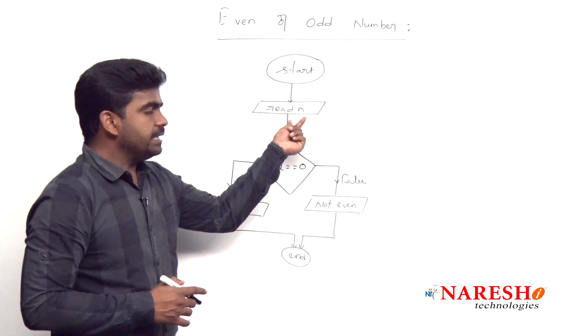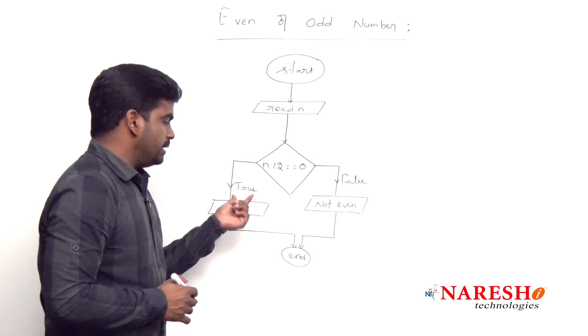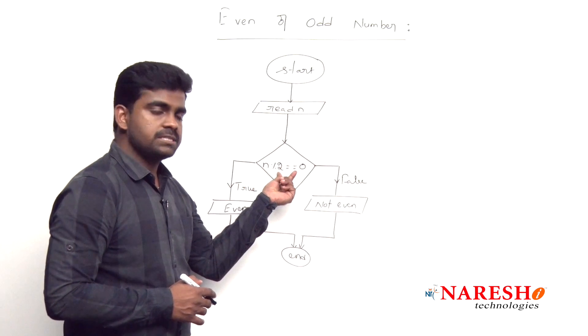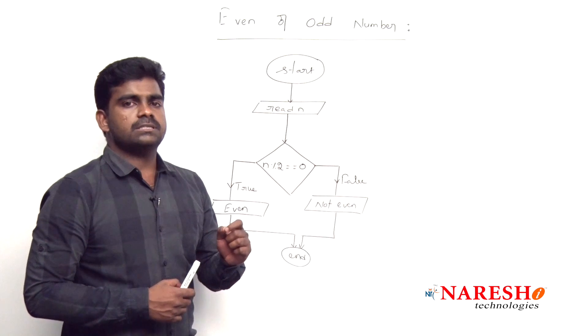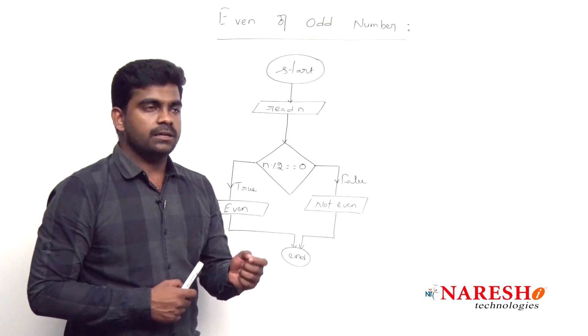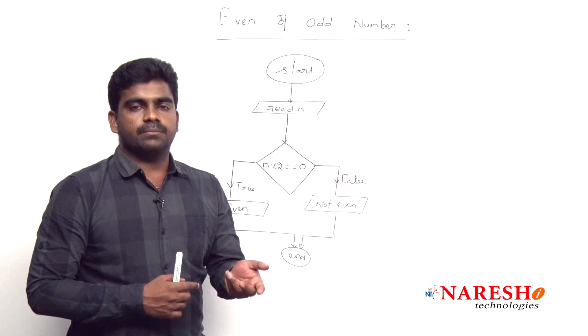Here after reading, we are checking that condition. The condition is true, then it will display that even. If the condition is false, it will display that message is not even. This is just how to write the flowchart to understand that the given number is even or odd number.